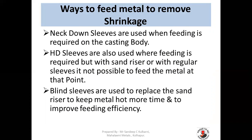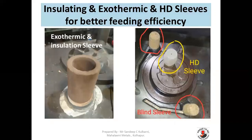Neck-down sleeves are usually used when feeding is required on the casting body. HD (high-density) sleeves are also useful where feeding is required but regular sleeves cannot feed at that particular point. Blind sleeves are used to replace sand risers, to keep metal hotter longer and improve feeding efficiency. You can see pictures of exothermic or insulating sleeves with proper bases, HD sleeves on the casting with blind sleeves replacing sand risers for more efficient feeding.